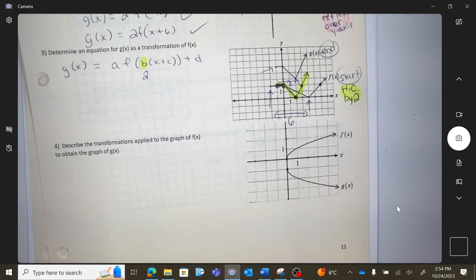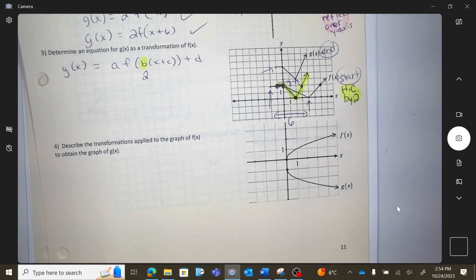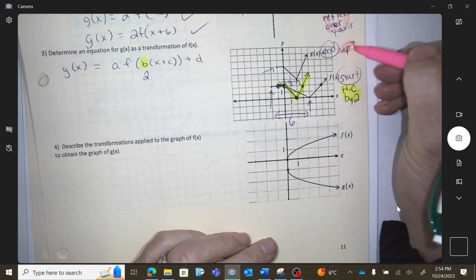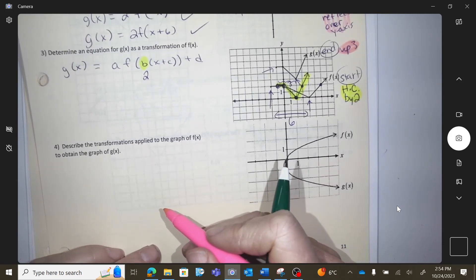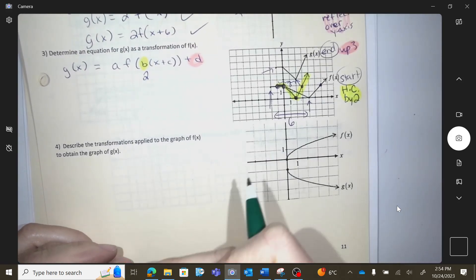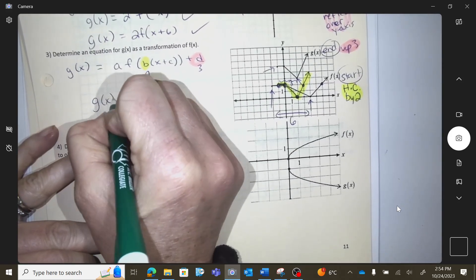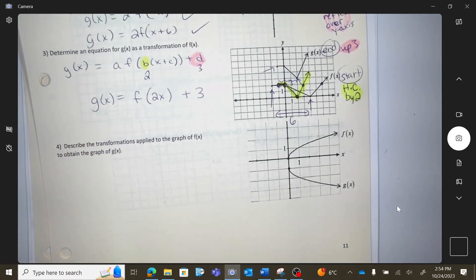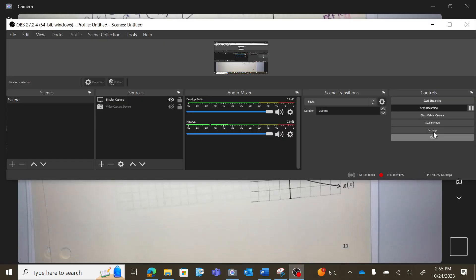Now what do I have to do yet to move from my yellow to the end? I need to move it up. How many? One, two, three. So then I have to move it up three, which would change the letter D. So G of X equals F of 2X plus three. You have to do it step by step saying, did I stretch, compress, reflect. Once you're done that whole list, then look at the shifts. Thank you.